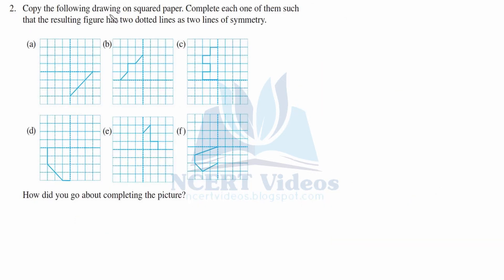Question 2: Copy the following drawings on squared paper and complete each one such that the resulting figure has two dotted lines as two lines of symmetry. For part A, the actual figure is given, and there is a vertical line of symmetry and a horizontal line of symmetry. Similarly, you can see in the pictures: horizontal and vertical lines of symmetry for each part. Let's do part A.